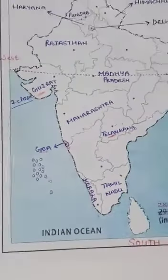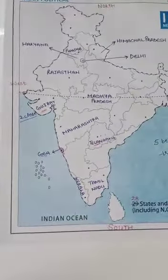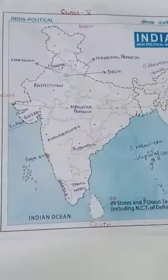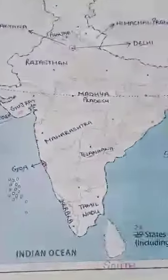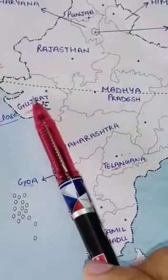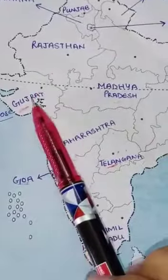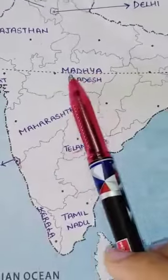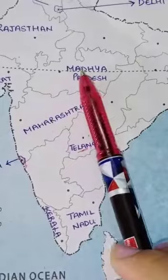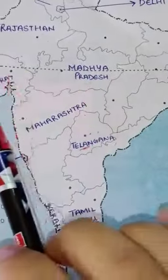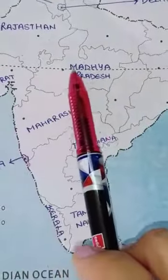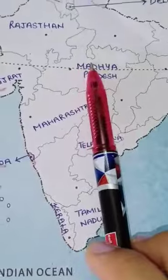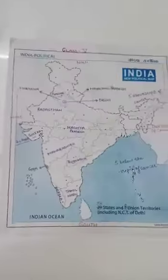Now near the Tropic of Cancer, here is Gujarat — just close to the Tropic of Cancer. And in the middle of the Tropic of Cancer is Madhya Pradesh. This covers our map.